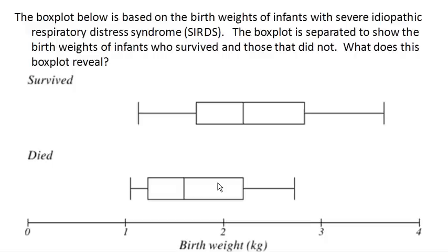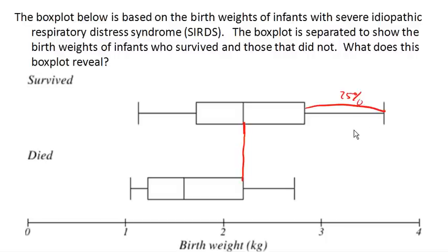In fact, we can see that the median birth weight of those that survived is about the same as quartile 3 of the birth weight of those that died. This means that 25% of infants that survived were heavier than all of the infants that died.